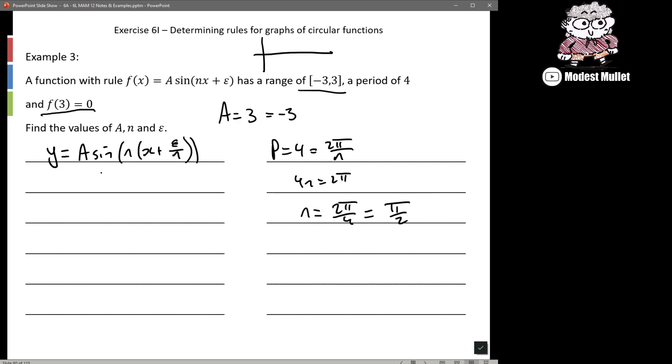And we have f(3) = 0. Well, period of 4. So this is an interesting thing where technically this could have two solutions.